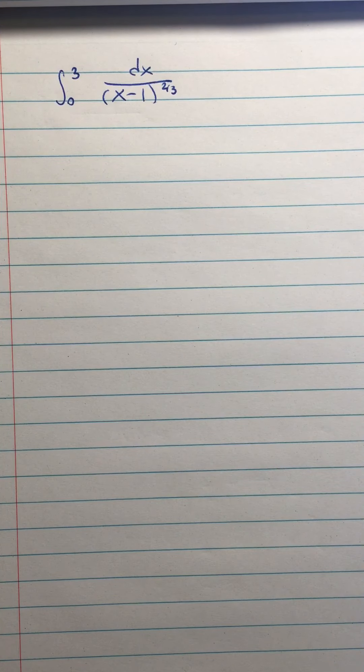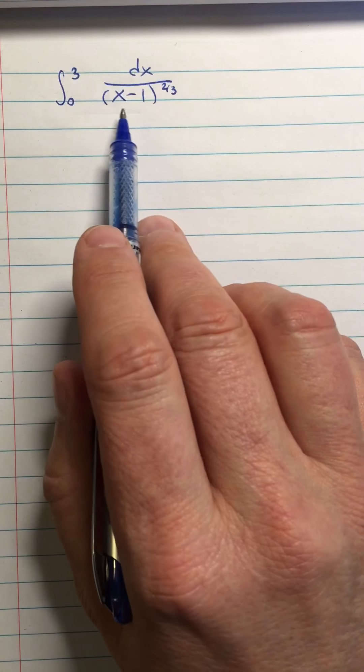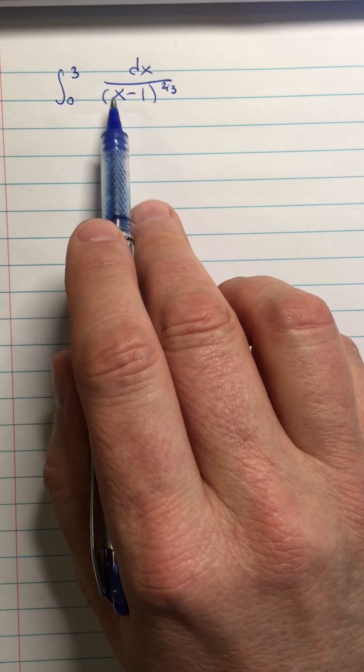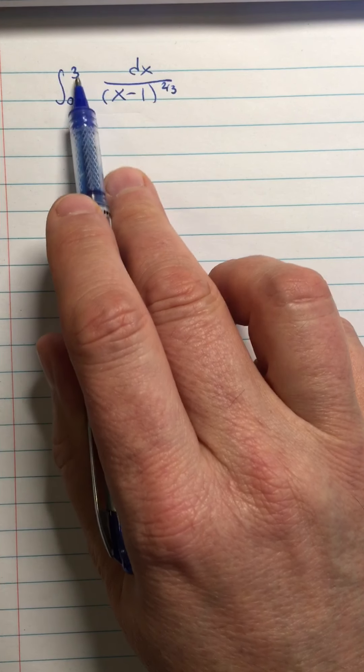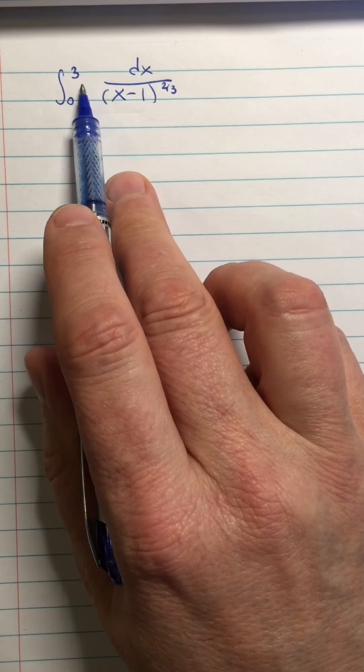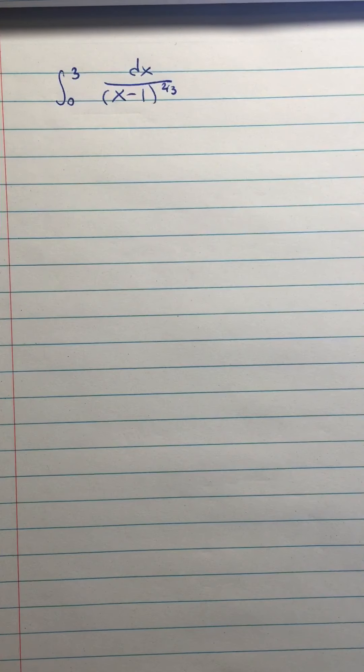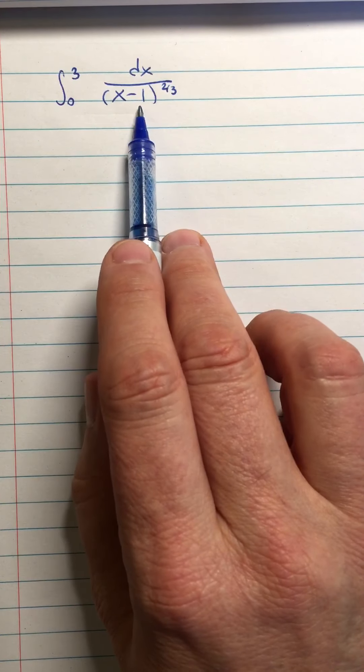All right, so you can see by looking at it that the problem area is going to be when x equals 1, which in fact is within the interval of integration, between the limits of integration. So you can see that just by looking analytically.